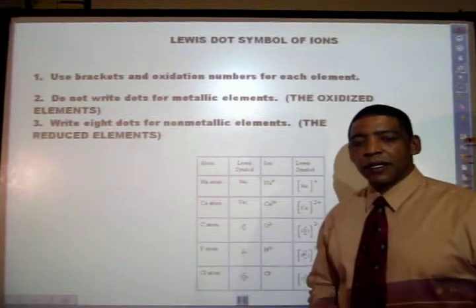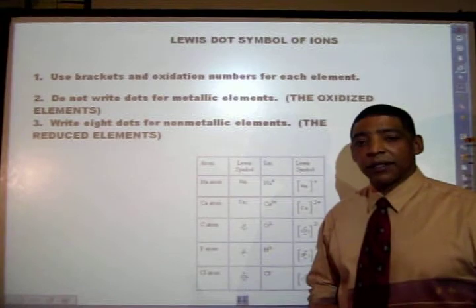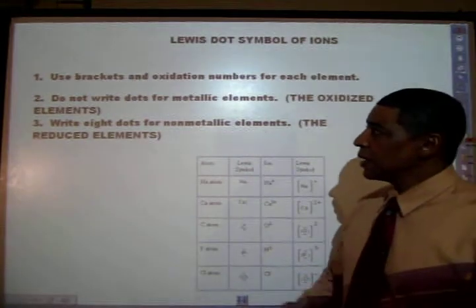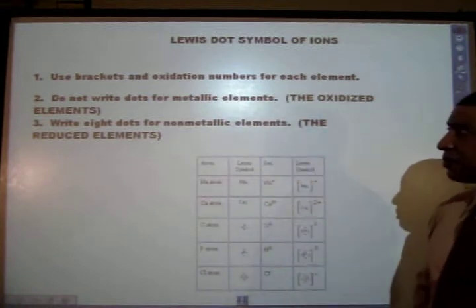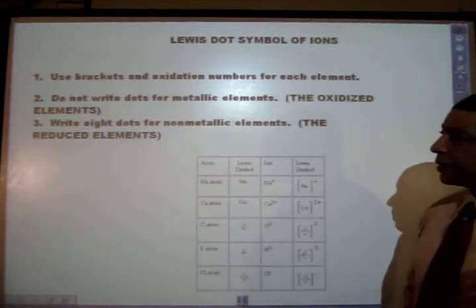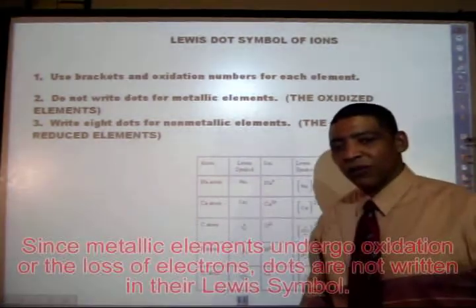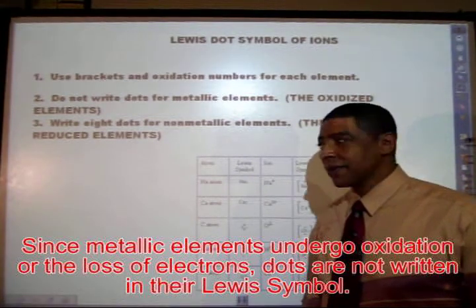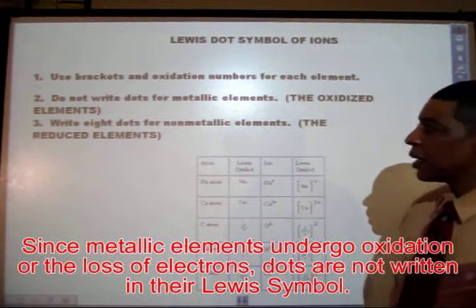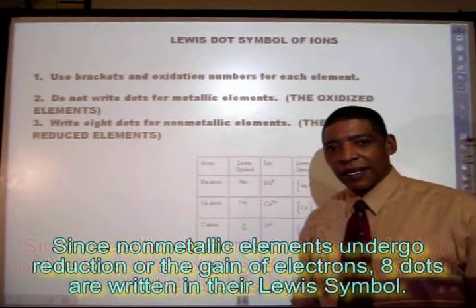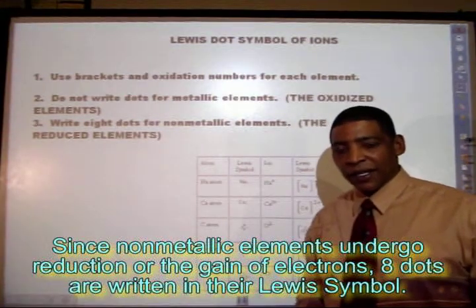When writing the Lewis dot symbols for ions, a different technique is required. First, use brackets and oxidation numbers for each element. Second, do not write dots for metallic elements. For non-metallic elements, always write an octet, or 8 dots.